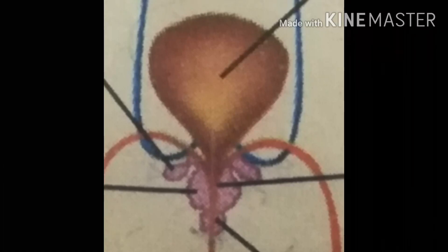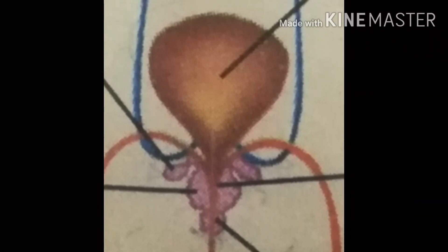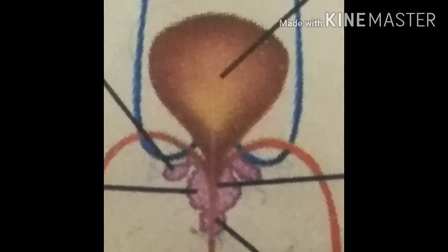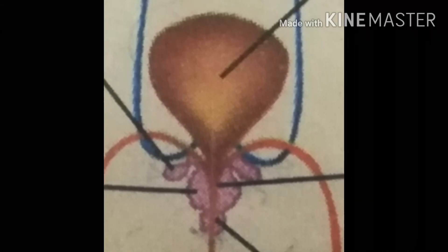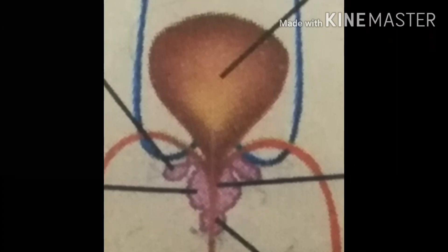The next organ is the bulbourethral glands, also called Cowper's glands. Their shape is ovoid — these are two ovoid glands. Their location is that they open into the urethra before it enters the penis. Their function is to make a secretion that serves as a lubricant.